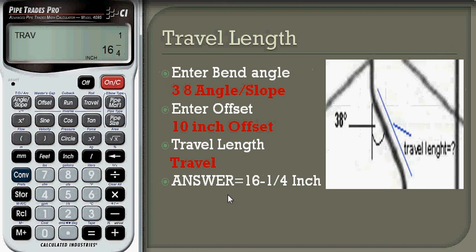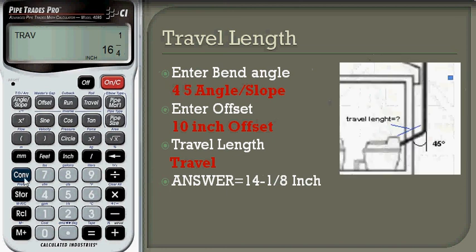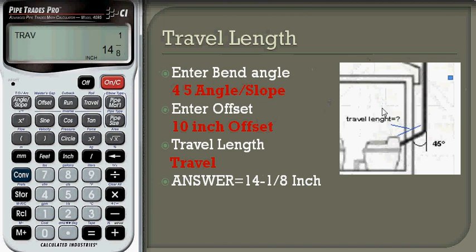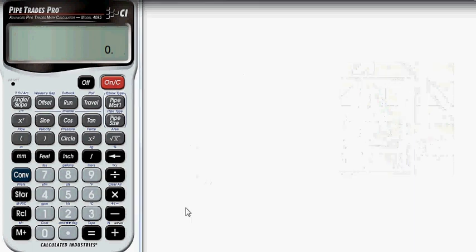For the offset having a 45-degree bend angle: clear first, then enter 45 degrees as the bend angle, enter the offset, and press travel. The answer is 14 and 1/8 inches. After all calculations, it is best to clear by pressing the CON/CV button and the clear all button — the one with the 'into' mark — so it's easy for the next calculations.